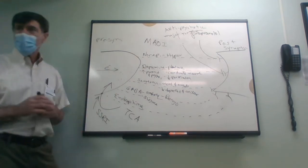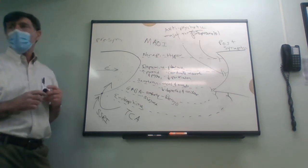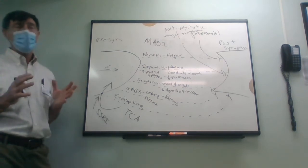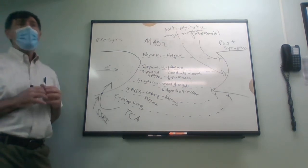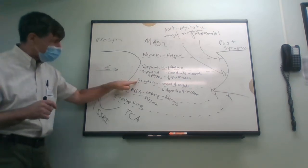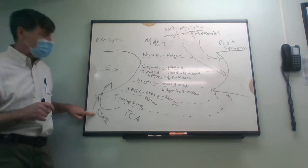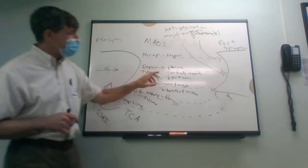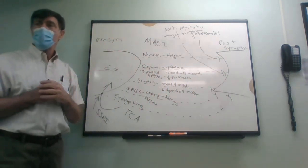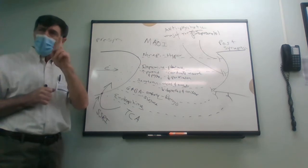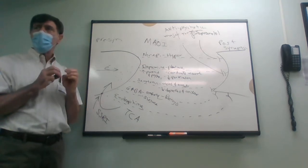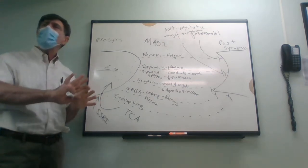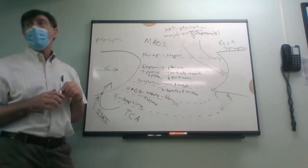Back to SSRIs — the first one being Prozac, fluoxetine, made by Eli Lilly. It might be the most prescribed medicine in history. It selectively blocks the reuptake of just serotonin — unlike the non-selective TCAs. More serotonin stays in the synaptic cleft, hits the receptor, and you're in a better mood and less anxious, with very few side effects. There may be some early nausea and GI upset that usually goes away.